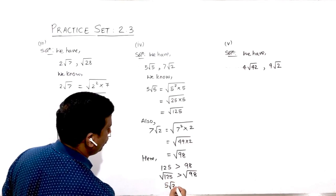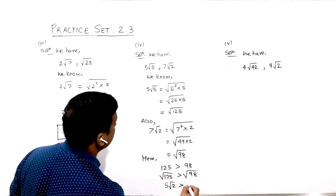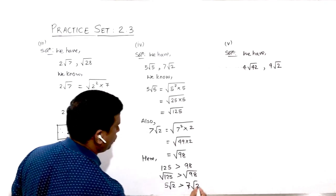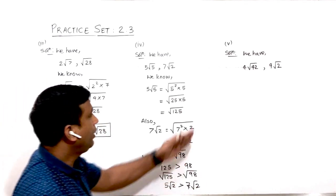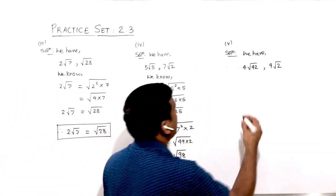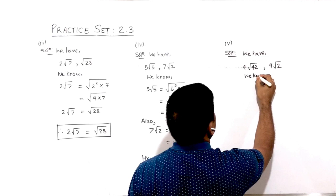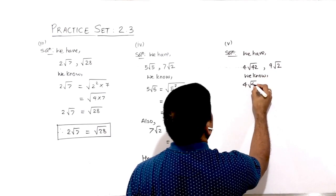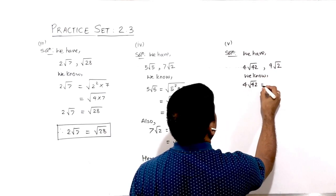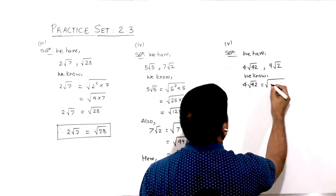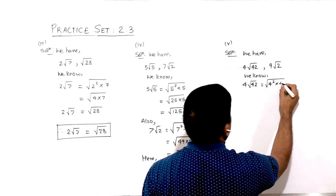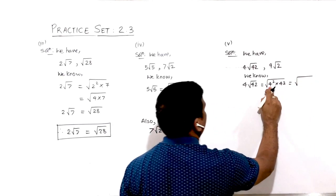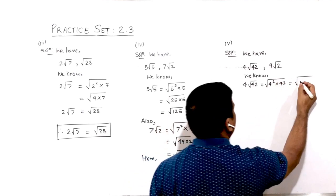Therefore 5√5 is greater than 7√2. Similarly, for number 5: 4√42 can be written as √(4² × 42) = √(16 × 42) = √672.